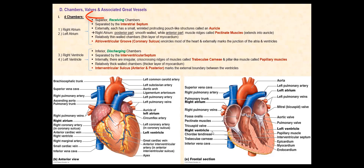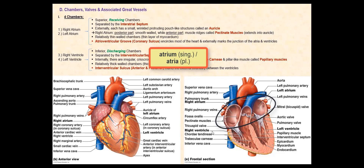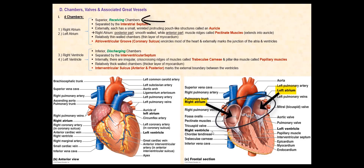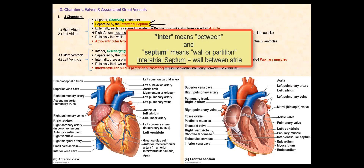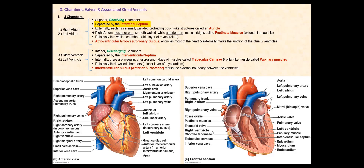Sheep, cows, dogs, pigs, rats, dolphins, whales, for example. Let us start off with the top half of the heart, the atria. We have two atria, the left atrium and the right atrium. These two chambers are the receiving chambers since they receive blood directly from veins. They are separated by a wall called the interatrial septum. Inter means between and septum means wall or partition, so the term interatrial septum literally means wall between atria. Externally, there are small wrinkled protruding pouch-like structures called the auricles. Each atrium has an auricle, so we have a left auricle for the left atrium and a right auricle for the right atrium. These auricles slightly increase the volume of the atria.